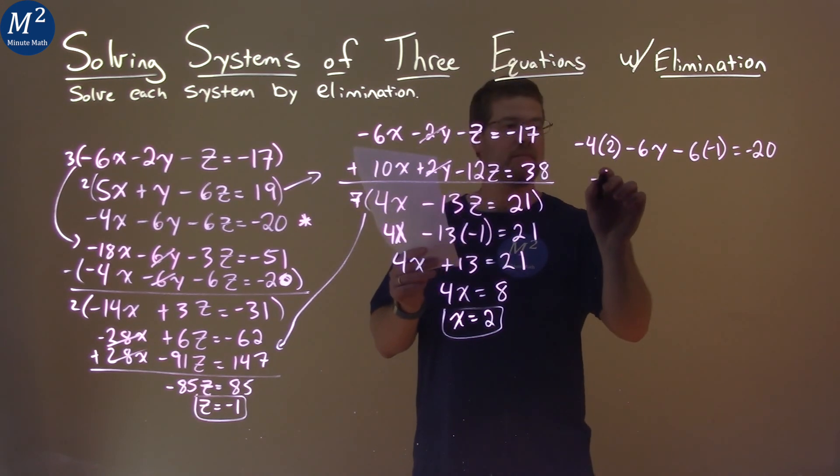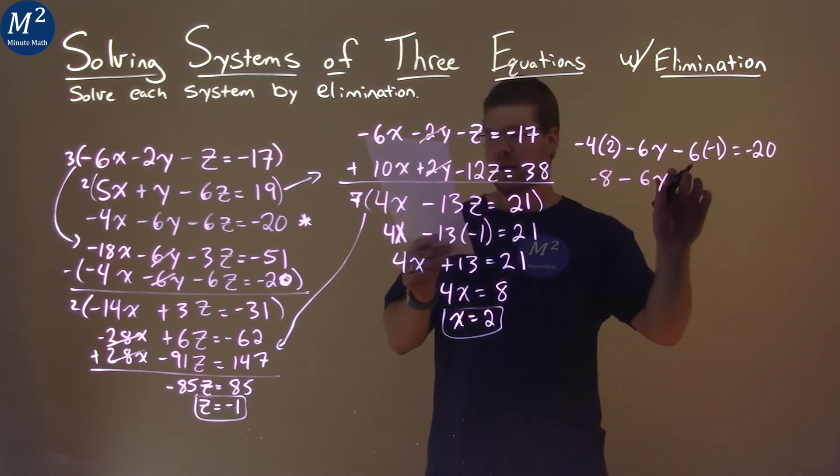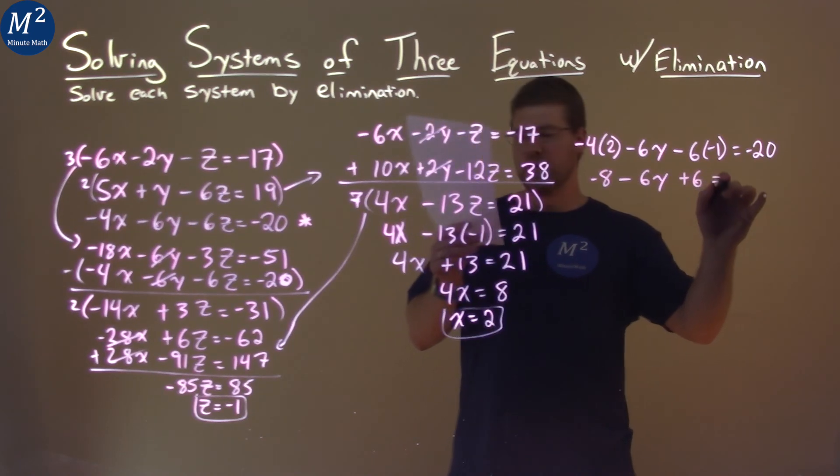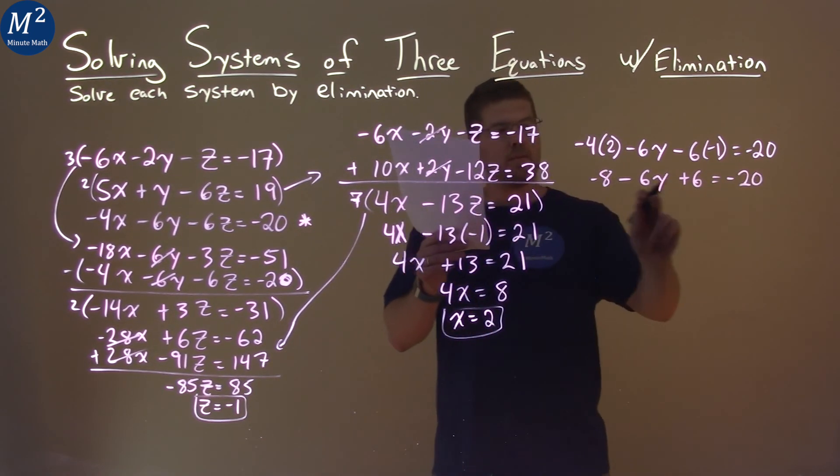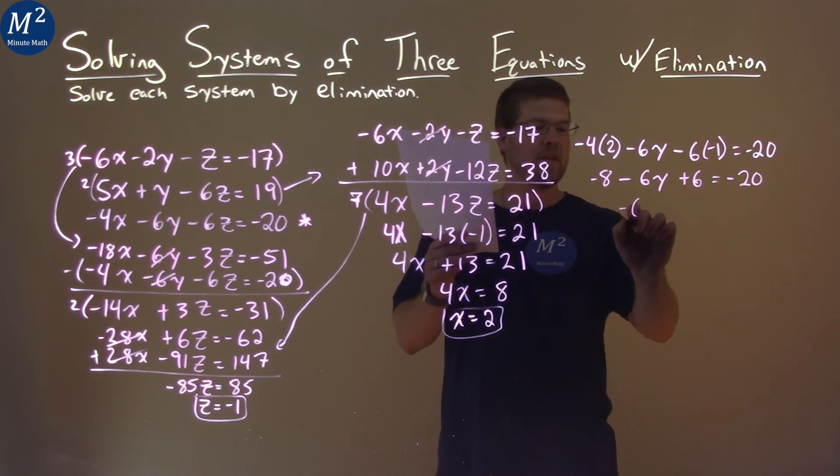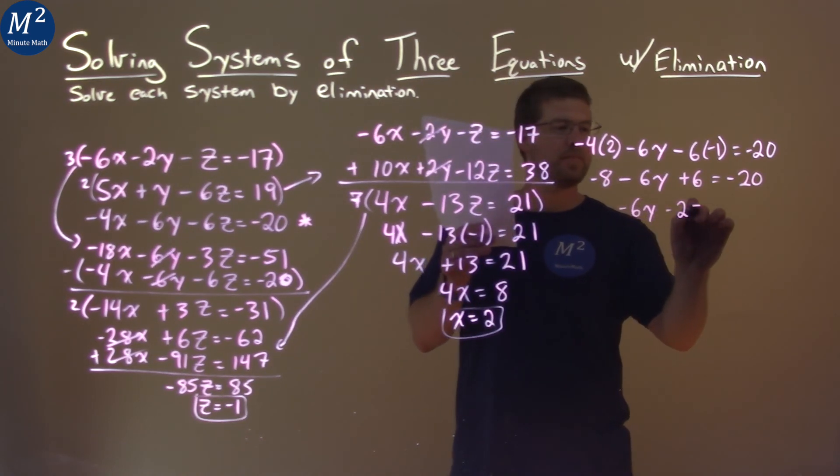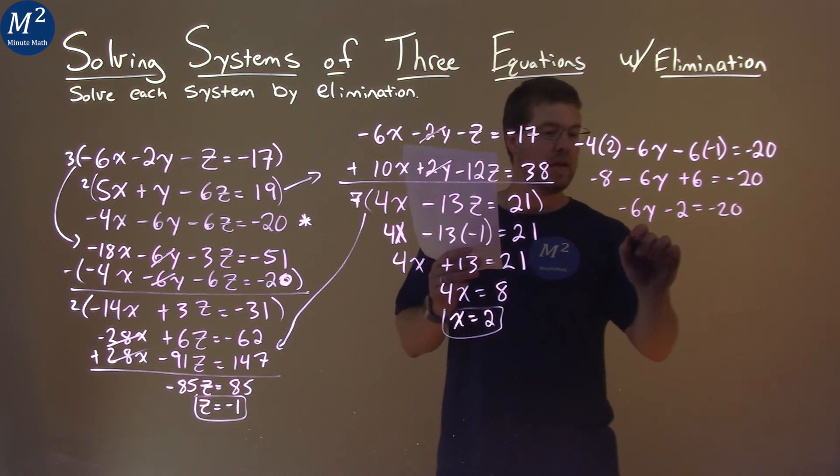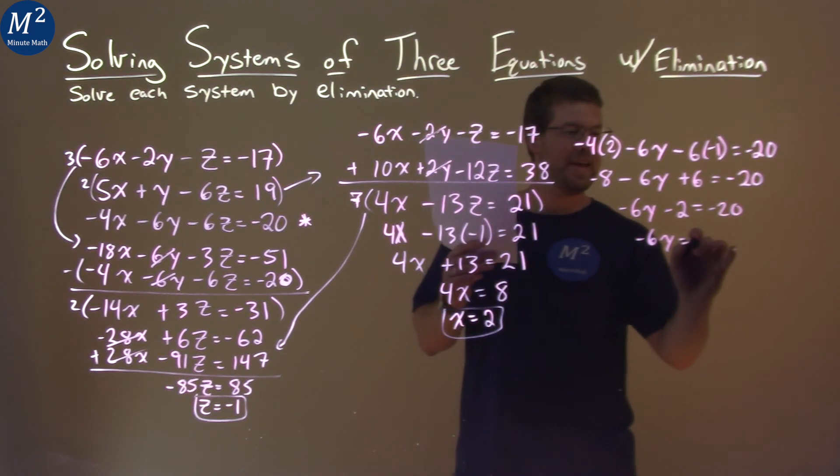Let's simplify this out. Negative 4 times 2 is negative 8, minus 6y, and then negative 6 times negative 1 is positive 6, equals negative 20. Negative 8 plus 6 is negative 2. So negative 6y minus 2 equals negative 20.